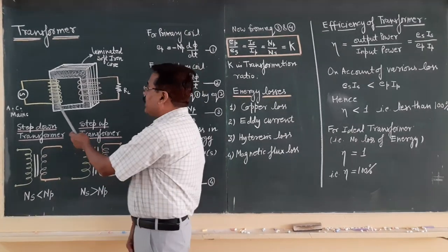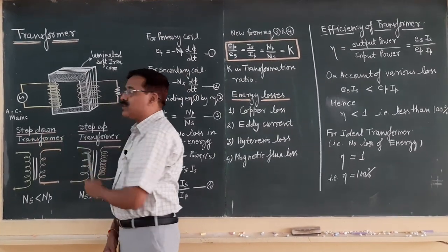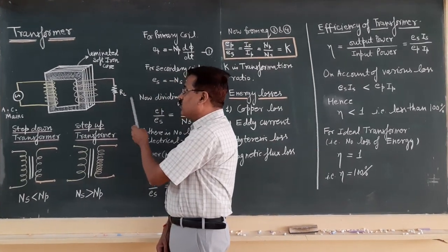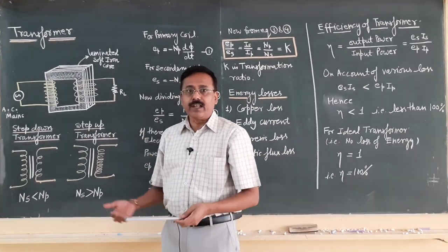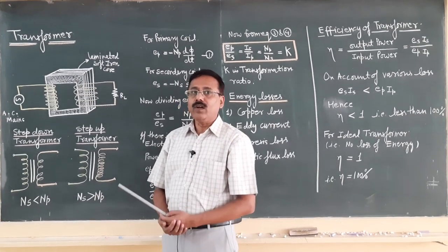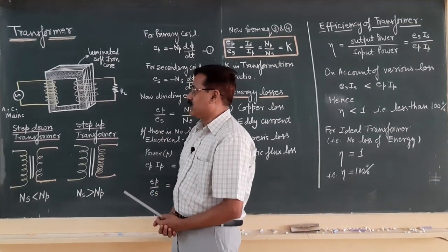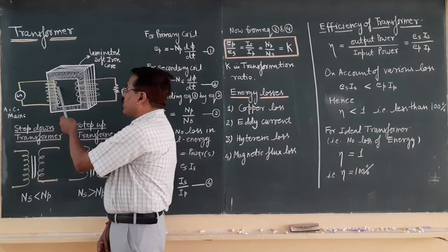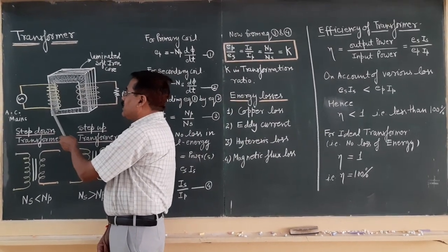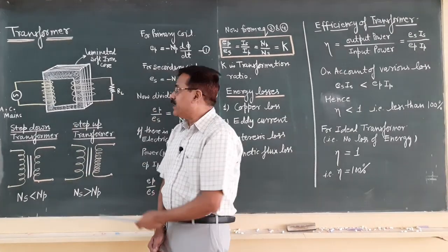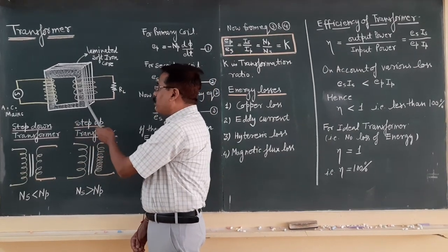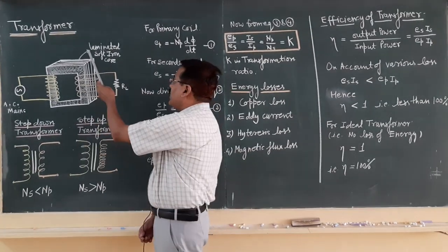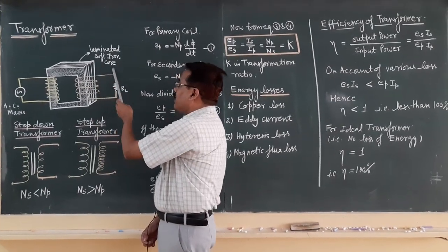The primary coil is always connected with AC mains, and the secondary coil is connected to the load where we need either a step-up or step-down alternating voltage. Working-wise, when alternating current flows in the primary coil, a magnetic flux is generated, and this magnetic flux is coupled with the secondary coil with the support of the laminated soft iron core.